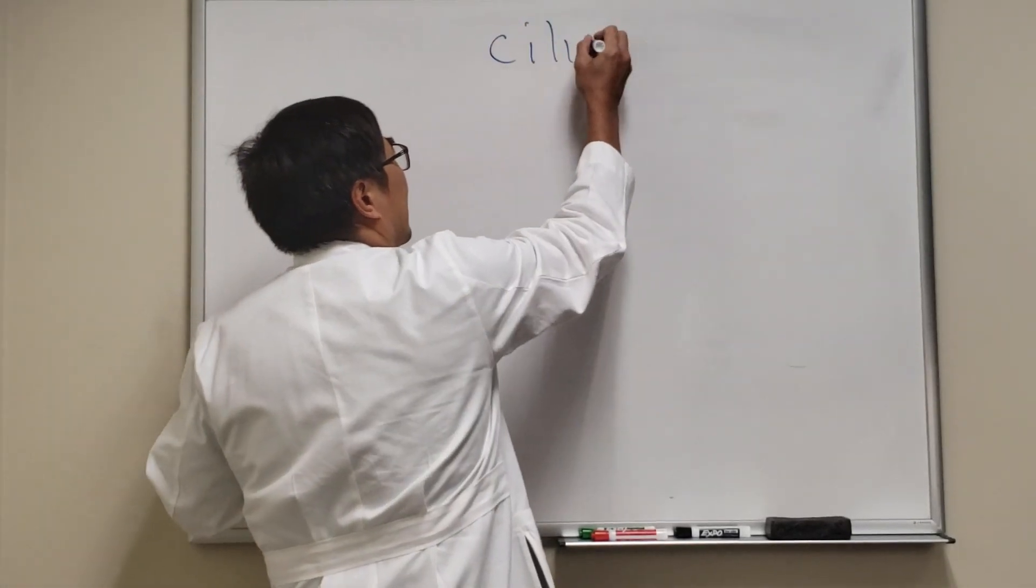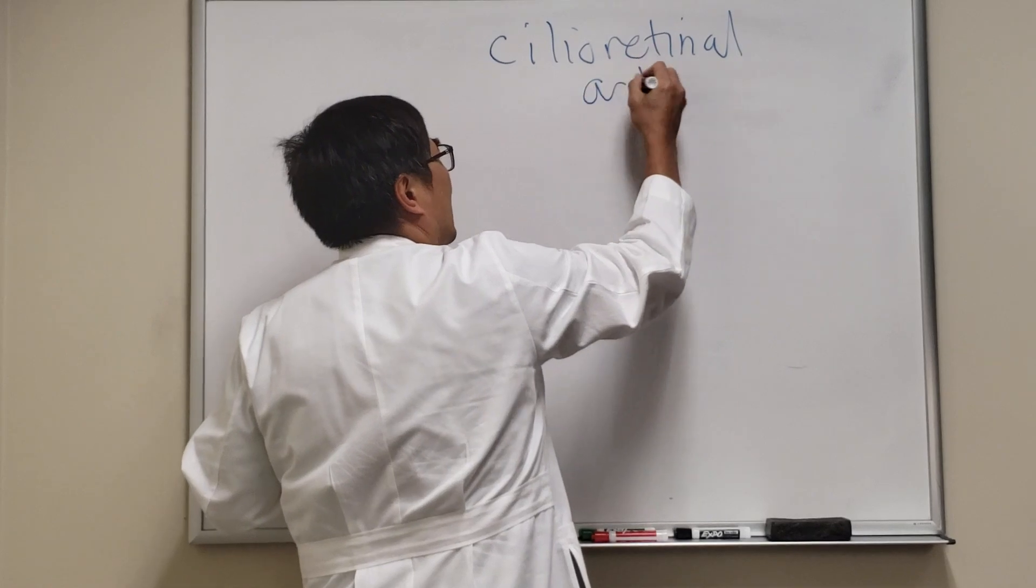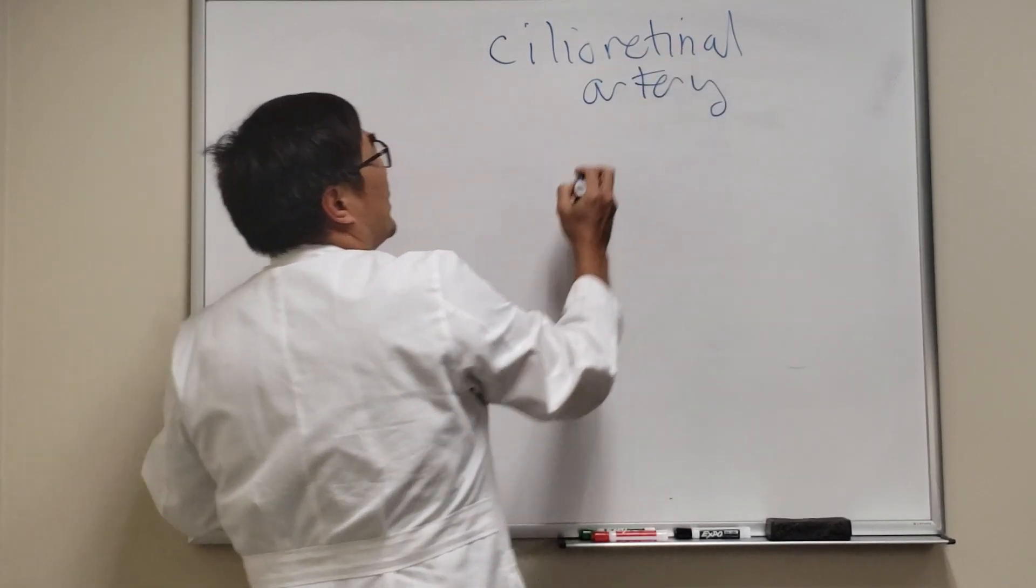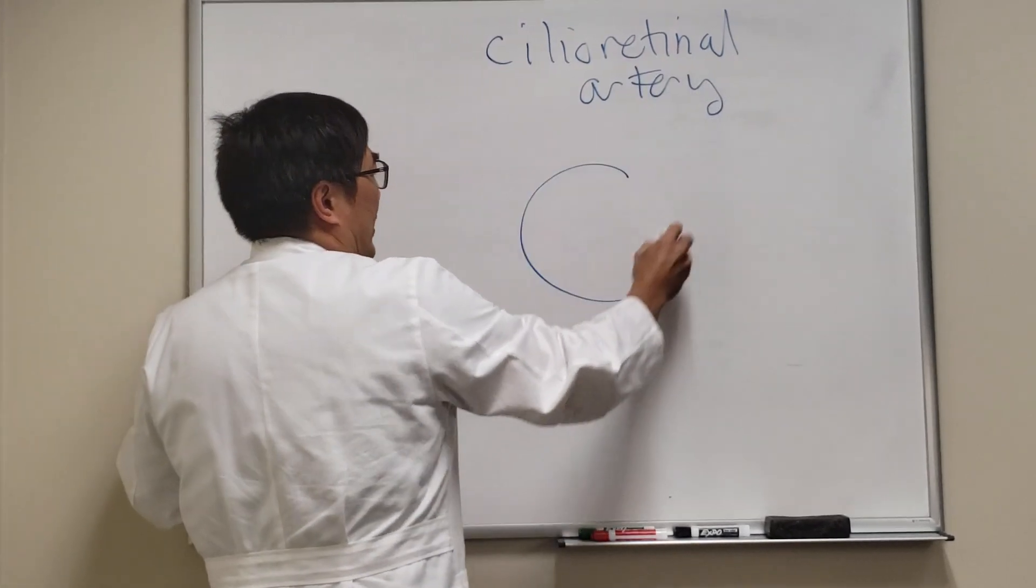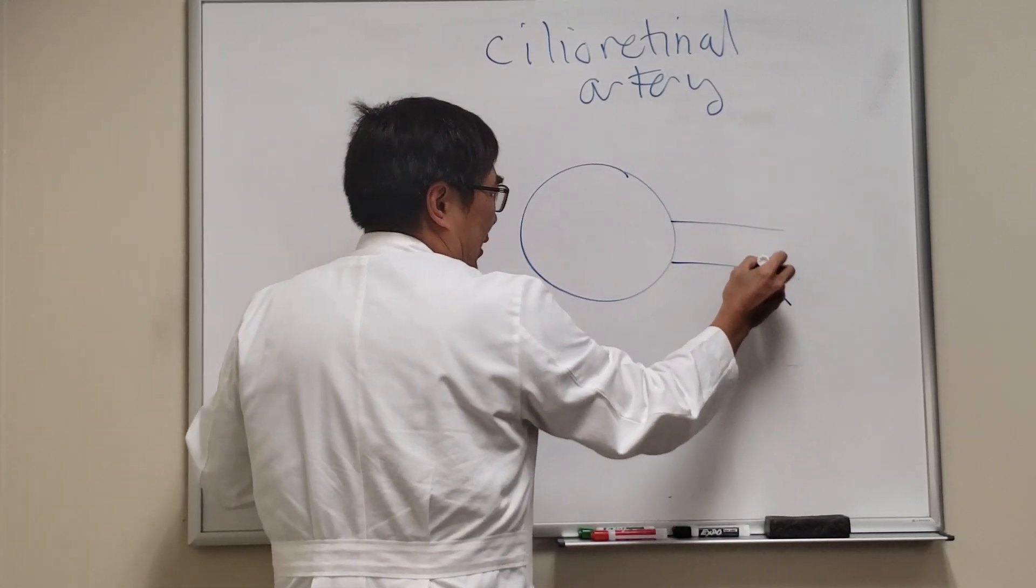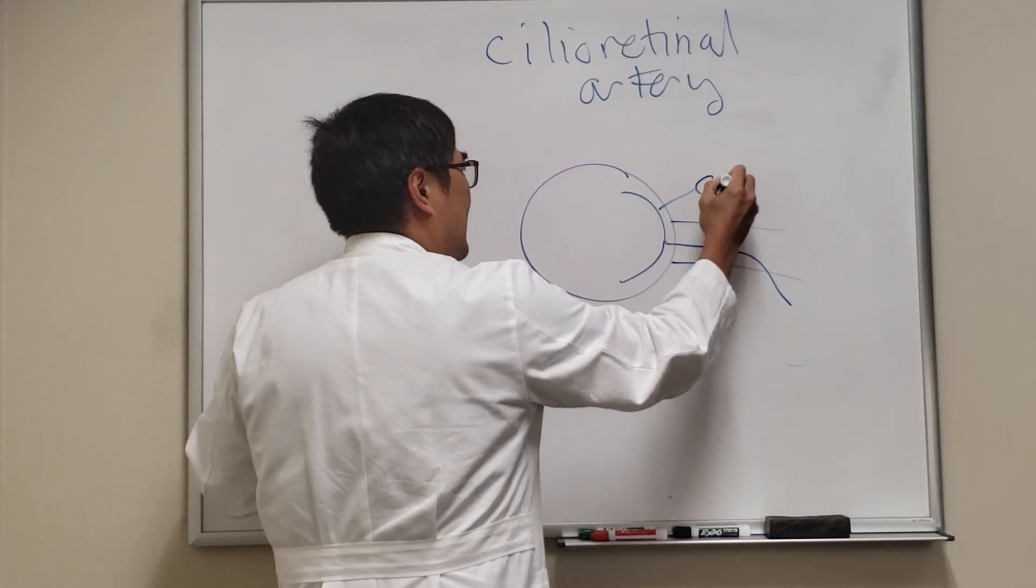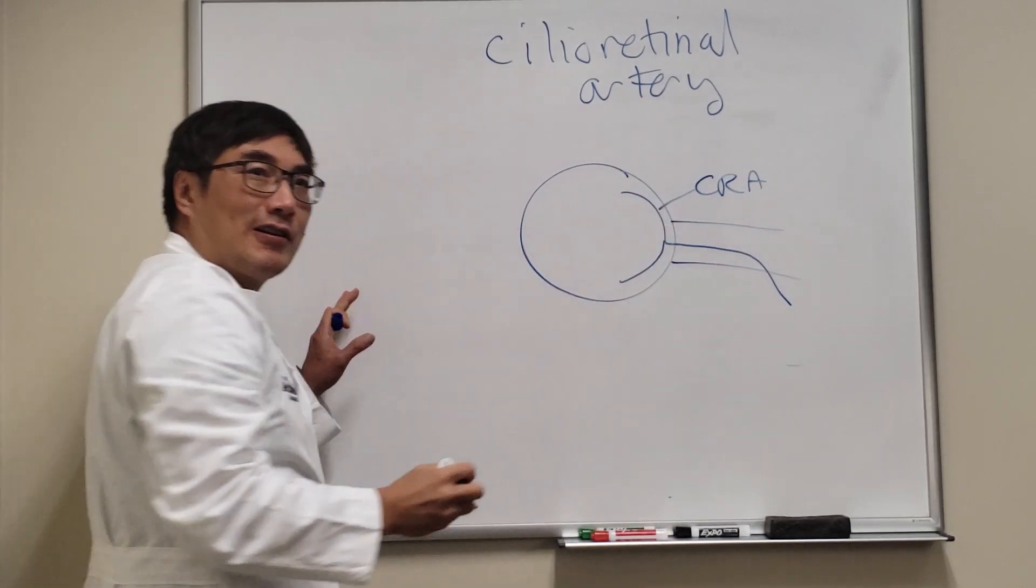I want to tell you about the cilioretinal artery and why it's important to neuro-ophthalmology. In the eye, the central retinal artery penetrates the optic nerve and supplies the retina.